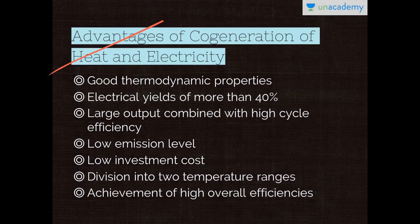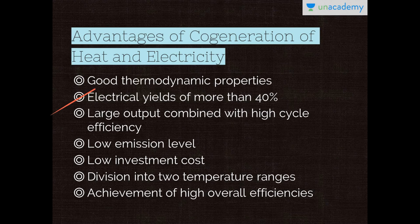Moving on to the advantages of co-generation of heat and electricity. The good thermodynamic properties of combined cycle plants are highly suitable for co-generation of heat and electricity. Electrical yields of more than 40% are quite common in industrial power plants with back-pressure turbines. Large output combined with high cycle efficiency, low emission level and low investment cost are the main attractive features of combined cycle power generation. It also helps in the division of the expansion process in two temperature ranges — 1100 to 550 degrees centigrade — achieving overall efficiencies exceeding the 50% range.